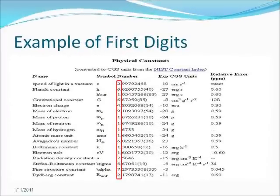Most numbers around you confirm Binford's Law. The following table shows the physical constants from the National Institute of Standards and Technology. A number in a table is more likely to begin with a smaller digit than a larger digit. For example, 1 most frequently appears as the first digit, 2 is slightly less frequent as the first digit, and other larger numbers are even less frequent as the first digit.